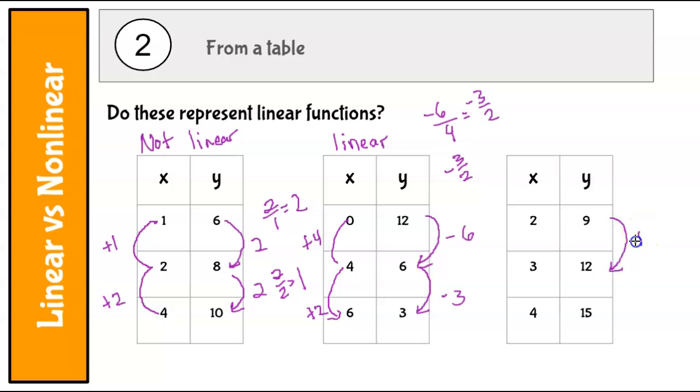So for here, up 3. Here, up 1. Here, up 1. Here, up 3. Yep, that's clearly linear. That is a pattern that is the same rate of change.